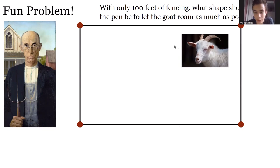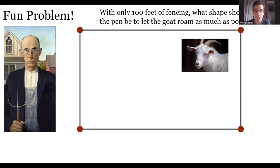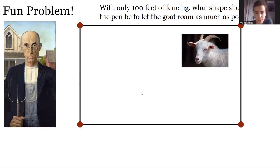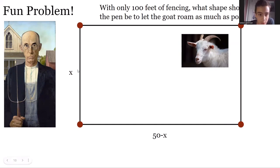The answer is 25 feet by 25 feet — those are the dimensions of the rectangle that yield the optimal grazing area. Now we'll go over why this is the case.